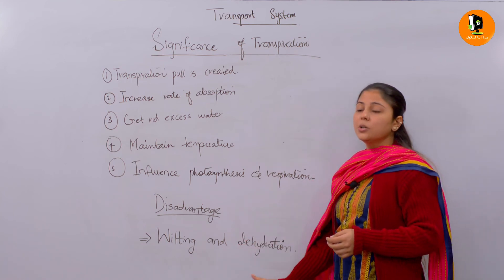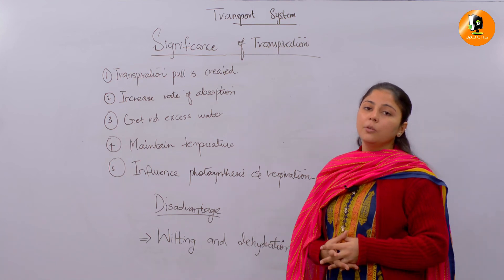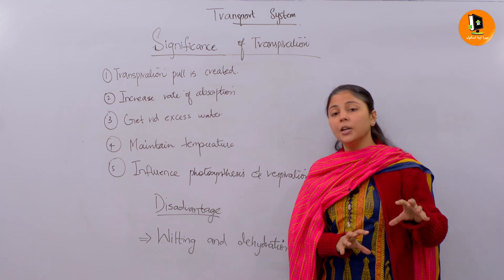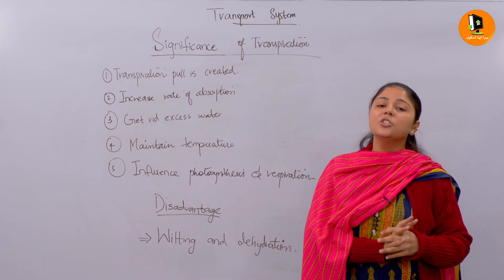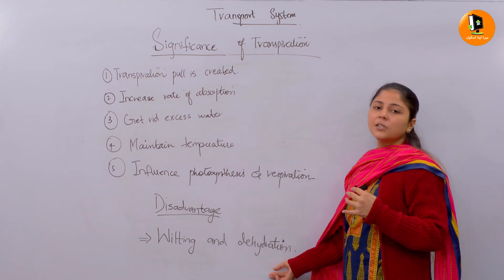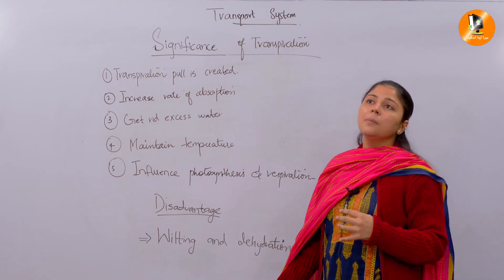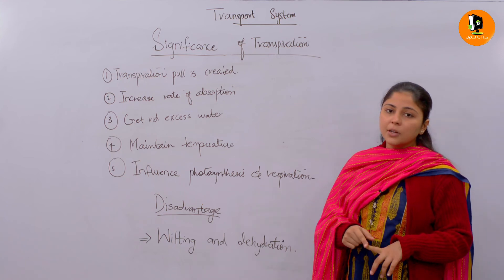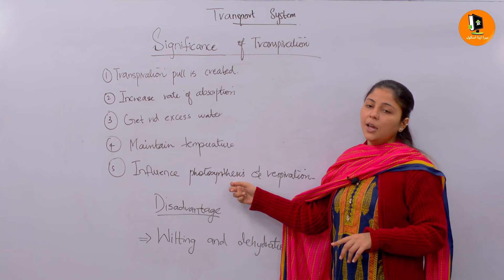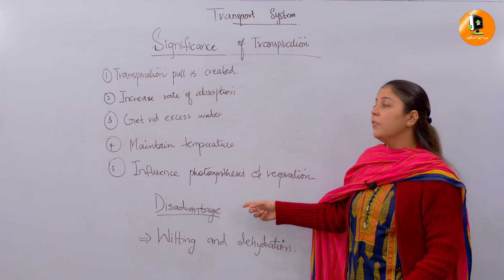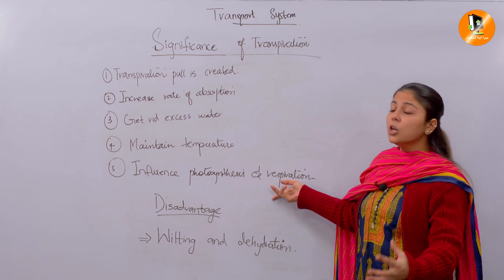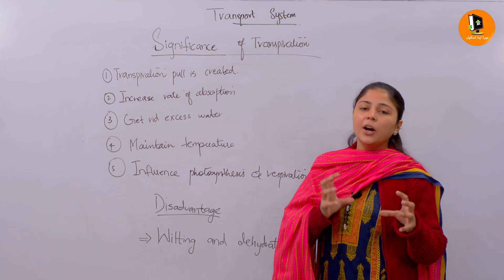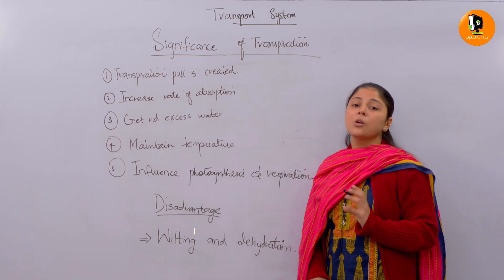When there is excessive transpiration, wilting occurs, or you can say dehydration. Wilting means the plant does not have sufficient water — it does not have the required concentration of water — and it shows the wilting process or faces dehydration. The plant is not in a healthy condition. Without proper water concentration, the plant cannot perform photosynthesis, and without photosynthesis there is no food, and without food respiration is also disrupted. All metabolic rates are interlinked — if one is disturbed, all the others are disturbed as well.